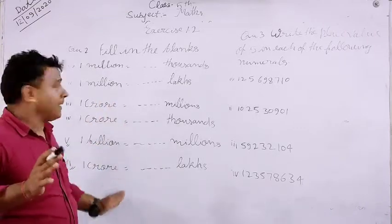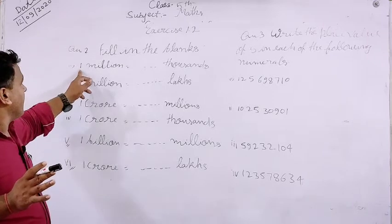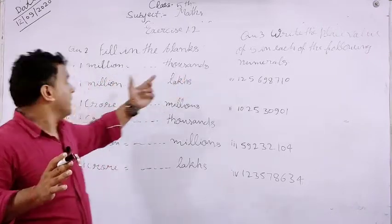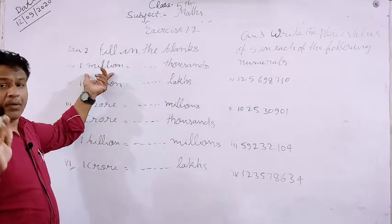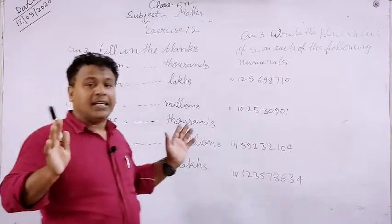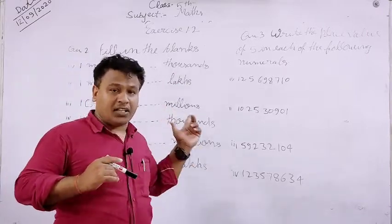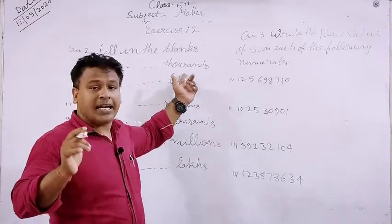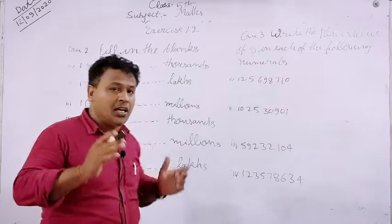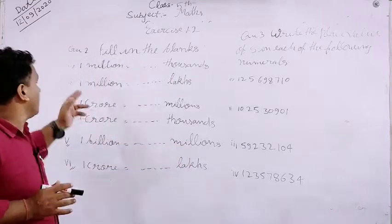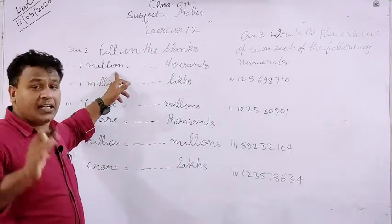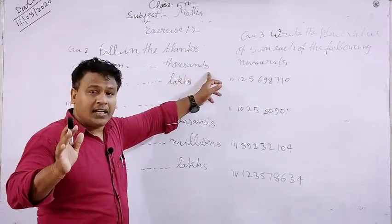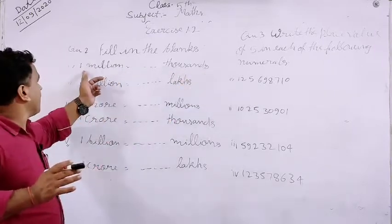First, yahan pe dekh'te hain — diya hai aapko: 'one million equal to ___ thousands'. Yeh dekh'iye, one million diya gaya hai. Aapko bataya gaya hai yeh kis system mein hai — International System mein hai, aur isko thousands mein, yaani Indian System mein change karna hai. One million jo hai International System mein, aapko isse Indian System mein change karna hai.